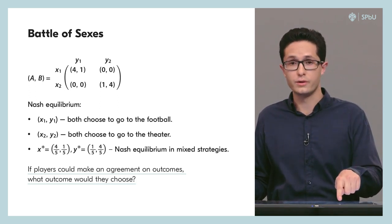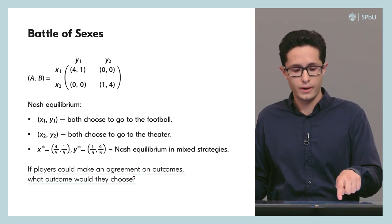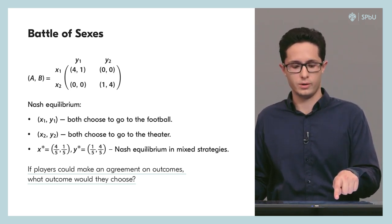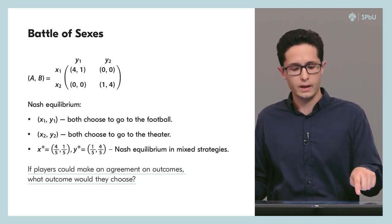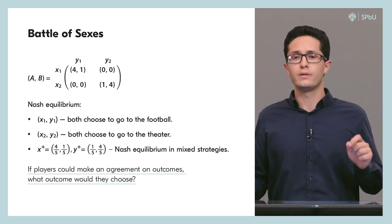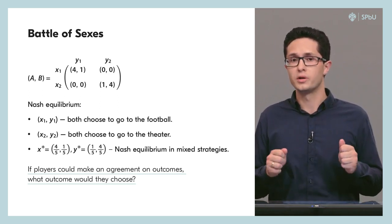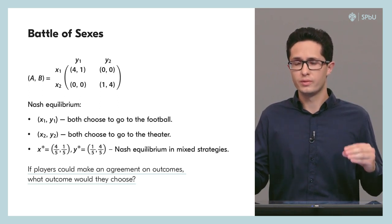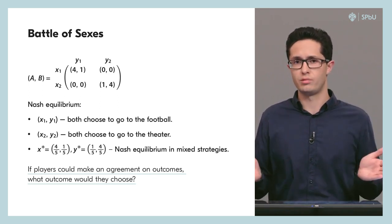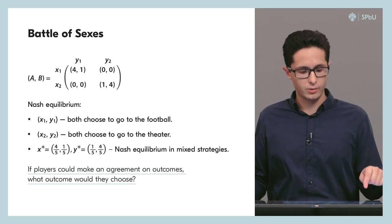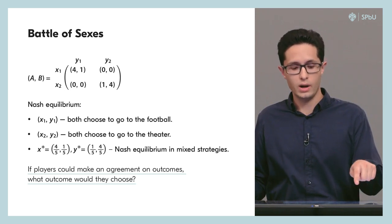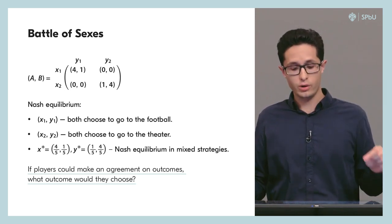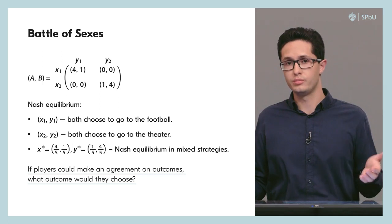If both choose to go to the theater, which is the strategy profile x2, y2, then the payoffs are one and four correspondingly. For the other strategy profiles x1, y2 and x2, y1, the payoffs are equal to zero because the couple does not want to be separated. In this bimatrix game the Nash equilibria are strategy profiles x1, y1 and x2, y2, and there is also a Nash equilibrium in mixed strategies.